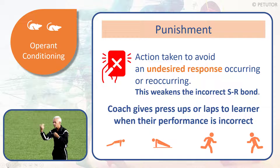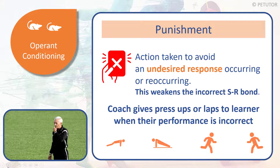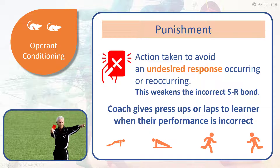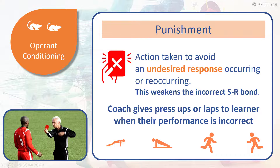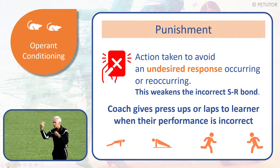The coach gives some kind of punishment when the performance is incorrect — it could be press-ups, push-ups, or running laps. The key point about punishment is that it's action taken to avoid the undesired response occurring. We need to weaken the incorrect SR bond by punishing every time they do something incorrectly. Please be mindful that there is a difference between negative reinforcement and punishment. Negative reinforcement is the removal of criticism when the performer carries out the desired response, which strengthens the SR bond. Punishment is given when the individual carries out the incorrect, undesired response.